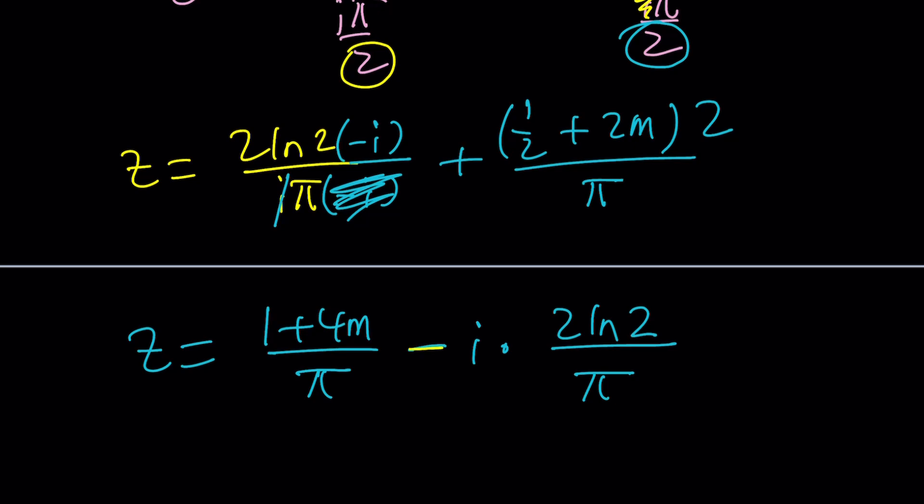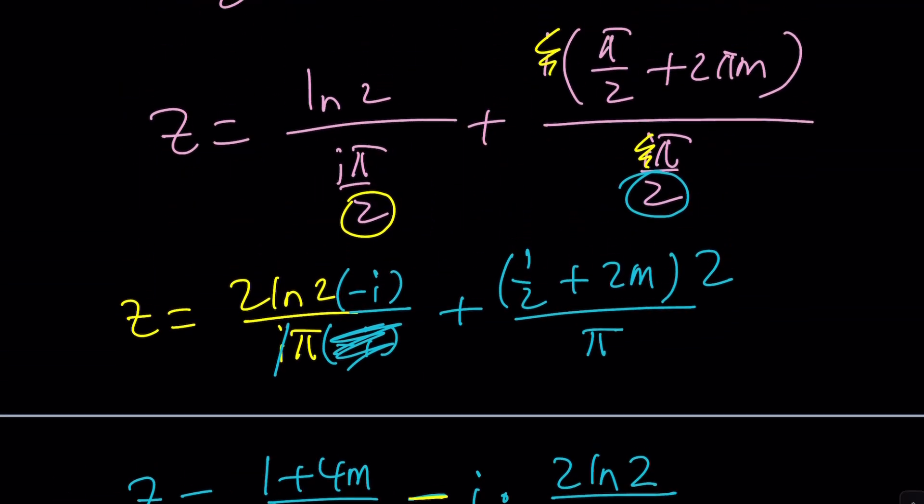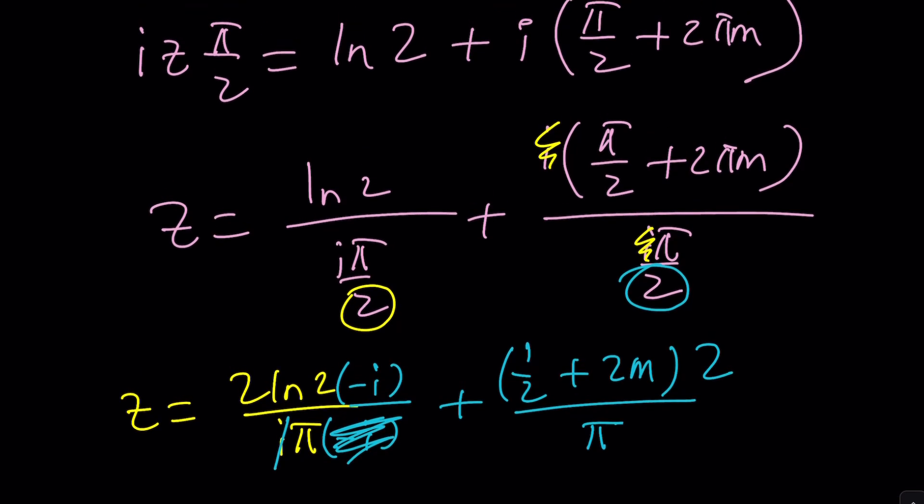can we also assume that m is equal to 0? Well, if you are interested in principal values, then m equals 0 will give you a simpler solution. So z is going to look like, I believe I forgot to cancel out something. Oh, yes.